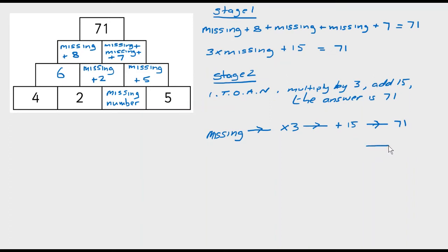To solve this, I need to go backwards, and instead of adding 15, I'm going to subtract 15. Instead of multiplying by 3, I'm going to divide by 3, and that's going to give me my answer. So 71, 71 minus 15, just going to change color here, 71 minus 15, well take your calculator out to do that if you need to, you should get 56.